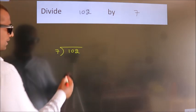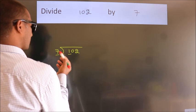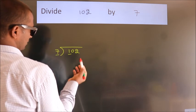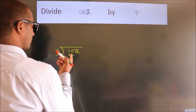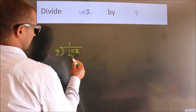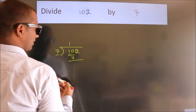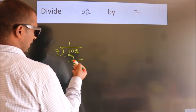Next, here we have 1, here 7. 1 is smaller than 7, so we should take 2 numbers: 10. A number close to 10 in the 7 table is 7 once 7. Now we should subtract, and we get 3.